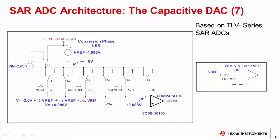During the conversion phase, the reference input sees a dynamic switched-capacitor load as the binary weighted bit decisions are made during each conversion clock cycle. Note the reference input voltage must remain stable as the binary weighted capacitor array is charged. It is important to highlight that the worst-case dynamic current transients tend to occur during the most significant bit decisions when the largest capacitor values are switching.